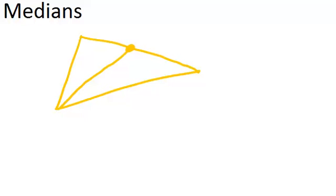First of all, a median is if you have a triangle and construct a midpoint of one of the sides and connect that midpoint to the opposite vertex. The line segment that you have just drawn is called a median.